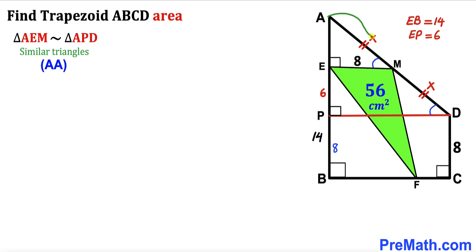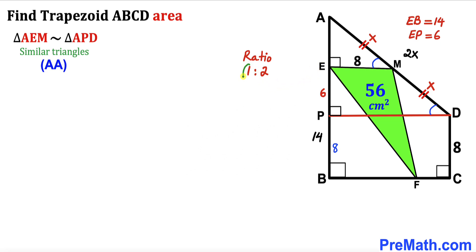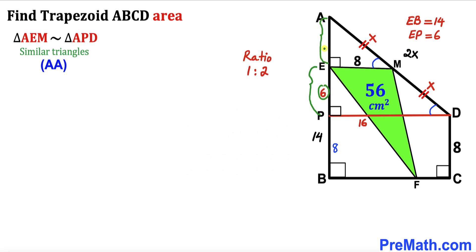Since the two right triangles are similar and the bigger triangle's side AD is 2x while the smaller triangle's side AM is x, the ratio of the two triangles is 1 to 2. Therefore, if EM is 8, then PD is twice that: 16 centimeters. Likewise, if EP is 6, then AE is also 6, making the whole length AP equal to 12 centimeters.